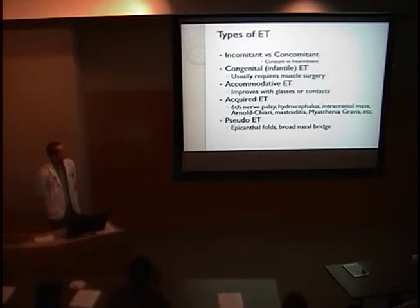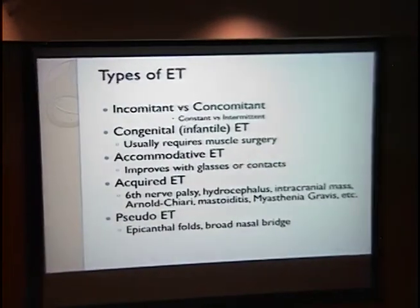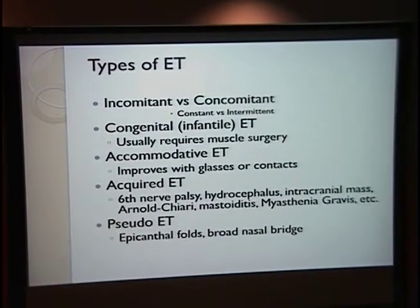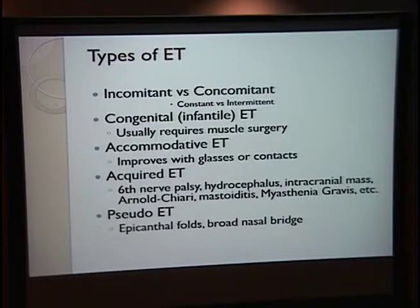Constant versus intermittent are also subcategories of concomitant, which are pretty much self-explanatory. More specific types of ET include congenital or infantile ET, which is present from birth or very shortly thereafter, and will most often require surgery to be repaired. Accommodative ET is a little bit easier to fix because it's caused most often by hyperopia, where patients have difficulty seeing up close, so that when they try and focus on things near them, the eyes want to converge and accommodate at the same time. The more they focus on something, the more the eyes will converge. This type of ET can often be treated by using glasses and reducing the amount of strain placed on the eye when trying to focus.